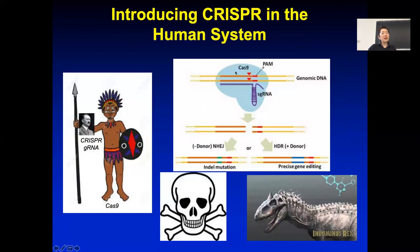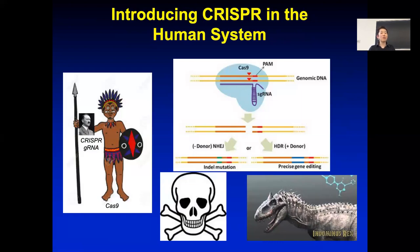A question about what happens after repair: if the repair creates a mutation, it will no longer match your guide RNA, so Cas9 won't cut again. But if the repair is perfect, the guide RNA and Cas9 are still there and will make another cut. Then next time the repair is imperfect. So eventually you get a knockout of the gene.